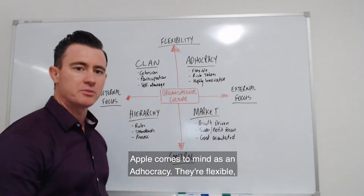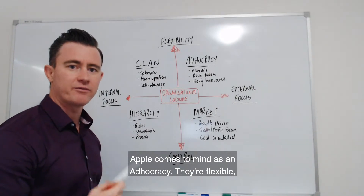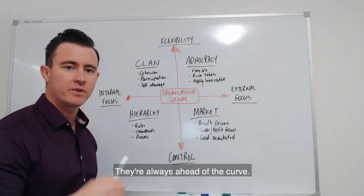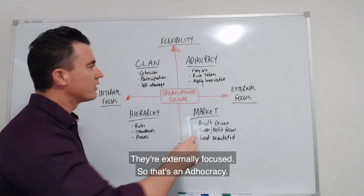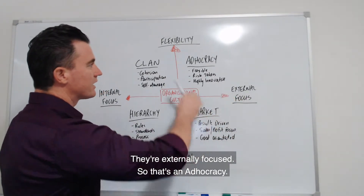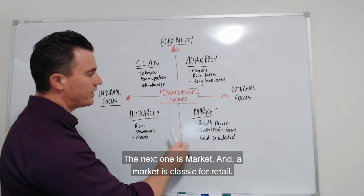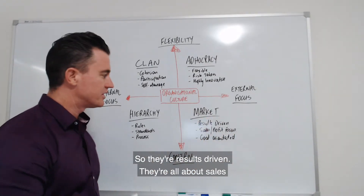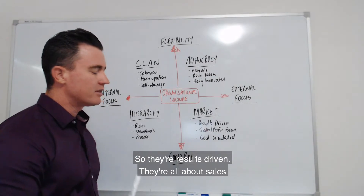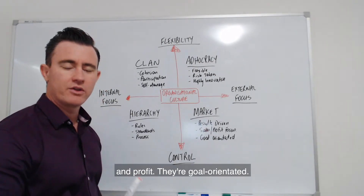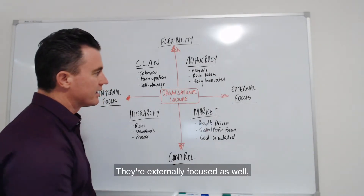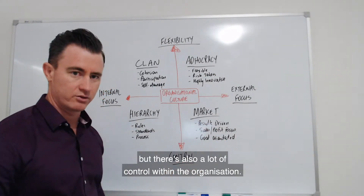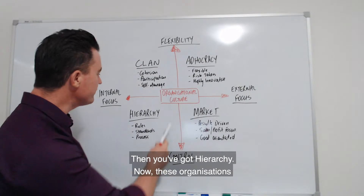We've developed this simple quadrant. There are four common cultures here — we're not suggesting they're all of them, but these are four that are common. The first one is clan. In a clan organization or culture, they're very flexible, they're internally focused, they're all about loyalty and participation, they're very cohesive, and there's a lot of self-management within that type of culture.